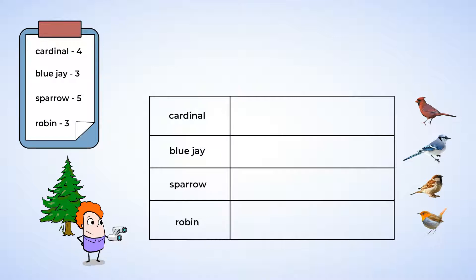Now we need to pick a picture to represent our data. Let's use an outline of a bird. To show that this is the picture we are using, we put the information in a key. A key defines your picture or symbol, so anyone looking at the graph knows what it represents. For us, one bird picture will represent one bird.